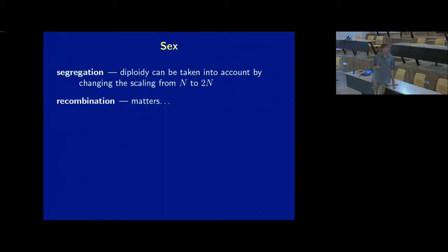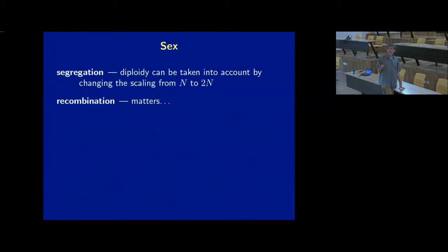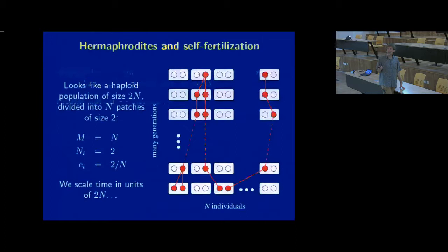There are two aspects of sex from the point of view of population genetics. First, segregation in diploid organisms — genes come in packages of two. This turns out to be extremely easy to model: you can basically just change the scaling from N to 2N. I'll let you read that by yourself since it's fairly trivial. Sex is also connected to recombination, which really is important and I do need to go through that.